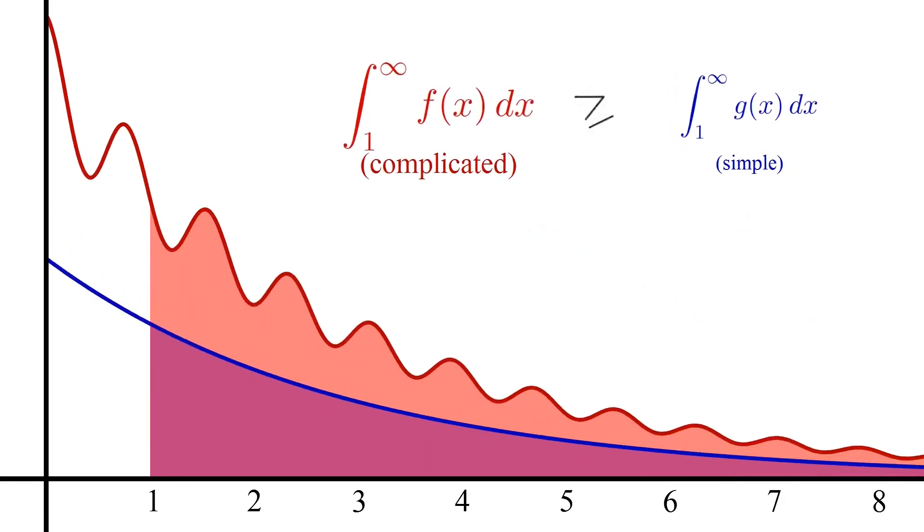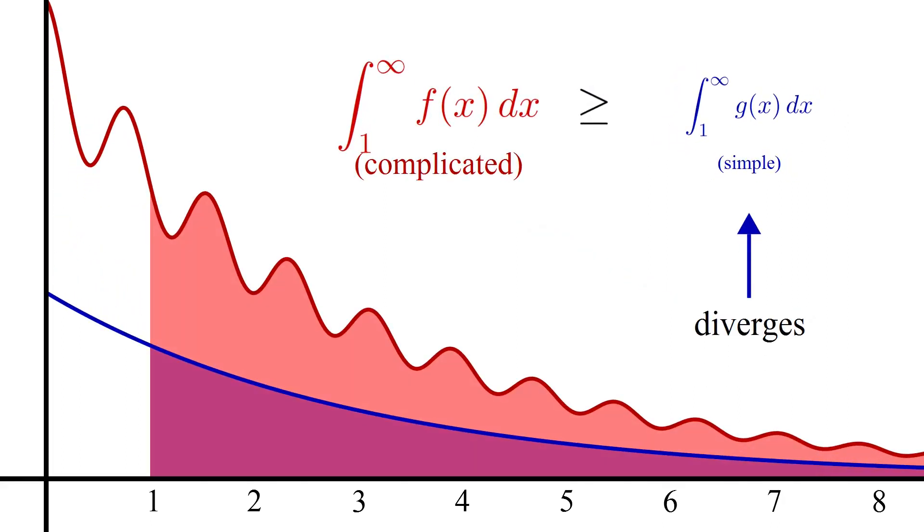And conversely, if the simpler integral was divergent and also smaller than the complicated integral, we could conclude the complicated integral was also divergent. The basic principle at work was if you are smaller than something finite you are finite, and if you are bigger than something infinite you are infinite.